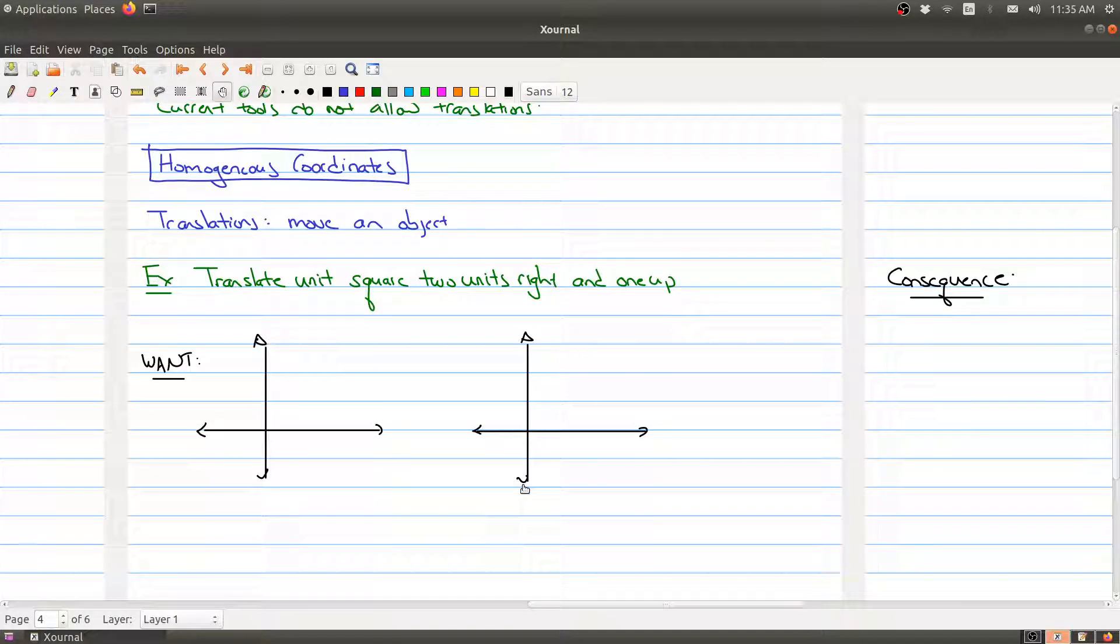So in the last part of our lecture today about linear algebra and computer graphics, what we want to do is talk about translating an object. Just to make it clear what I mean, think about for example we have a unit square right here and what we want to do is be able to translate it two units to the right.